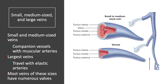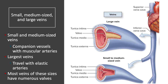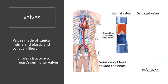Small and medium-sized veins are companion vessels to the muscular arteries, and the largest veins travel with the elastic arteries, the largest of the arteries. Most veins of these sizes have valves. The valves are made of the innermost tunic — the tunica intima — along with elastic and collagen fibers, and they allow us to continuously move blood toward the heart, similar in structure to the heart's semilunar valves.